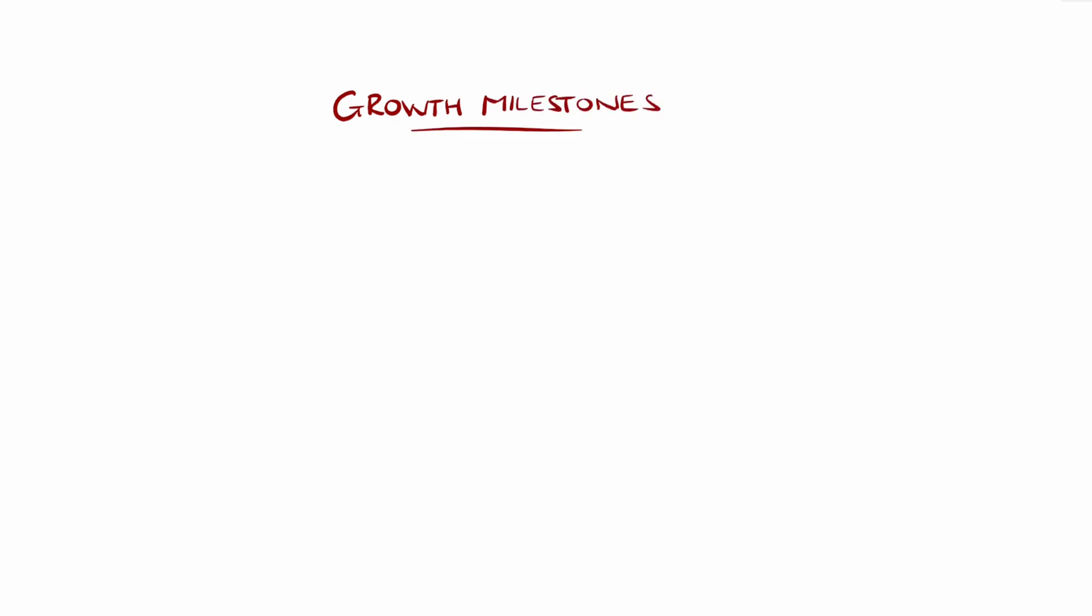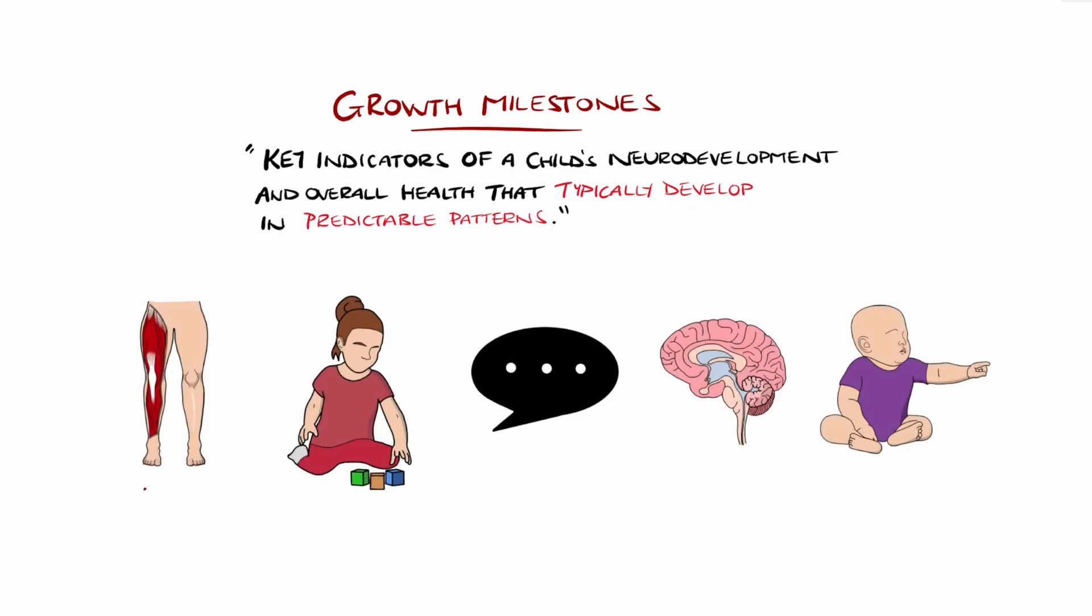Growth milestones are key indicators of a child's neurodevelopmental progress and overall health, which typically develop in predictable patterns during infancy, childhood, and adolescence. They are grouped into five main domains: gross motor, such as large muscle movements like sitting